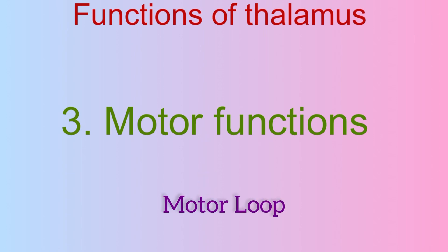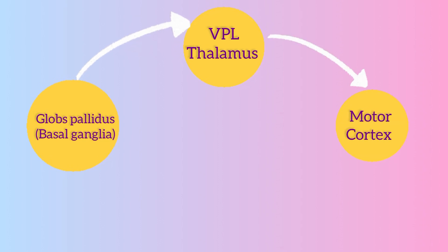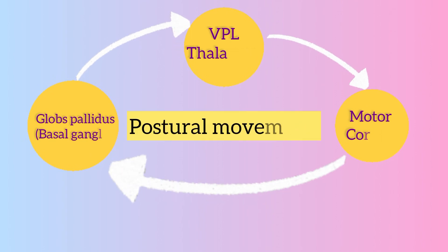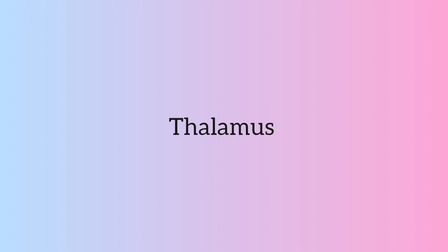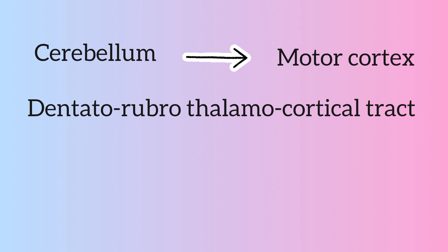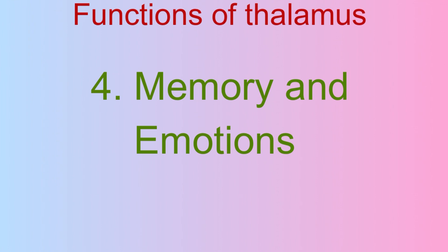Motor functions involve a big loop in the brain: the globus pallidus and basal ganglia project to the VPL nucleus of the thalamus, which then projects to the motor cortex, which projects back to the basal ganglia. Thalamus also links the cerebellum to the motor cortex through the dentato-rubro-thalamocortical tract, influencing planning and programming of movements.